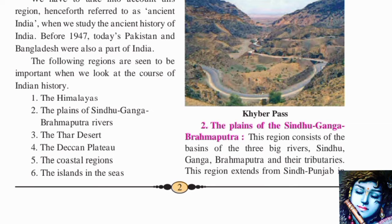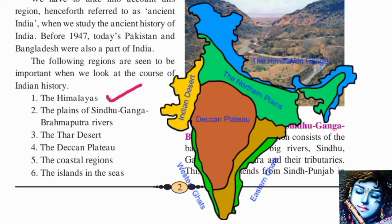So what is in India? First, the Himalayas in the north, as we have seen on the map. Then there are the plains of the Sindhu, Ganga and Brahmaputra rivers, which are called the North Indian Plains.